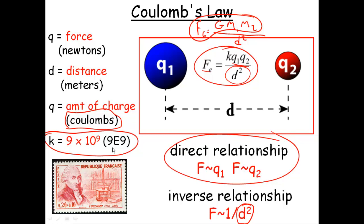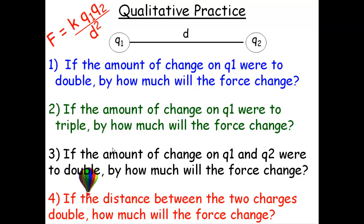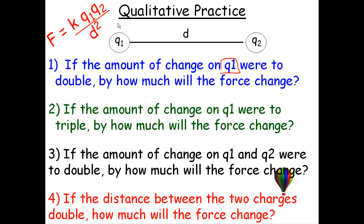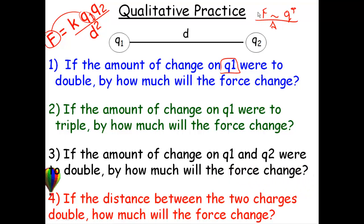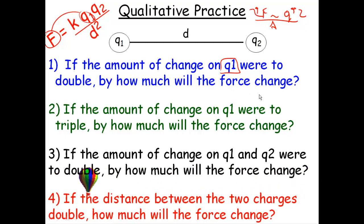Just like before, let's put it together in a qualitative type of practice. The first one: if the amount of charge on charge one were to double, how much would the force be changing? Well, that's a directly related idea. It's like a teeter-totter — there's the fulcrum. If we were to increase that side of the teeter-totter and make it bigger, the other side has to increase to stay balanced. So if we double this, we must double the other side. It should be double the force.